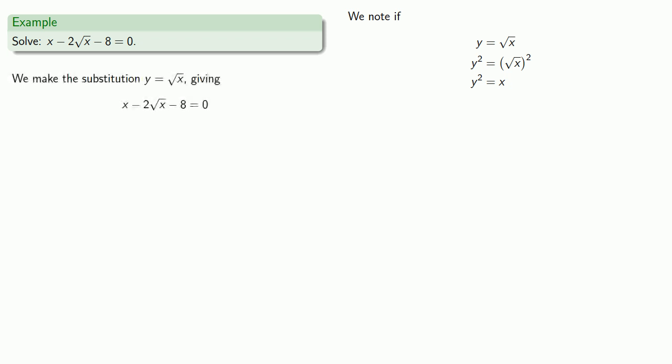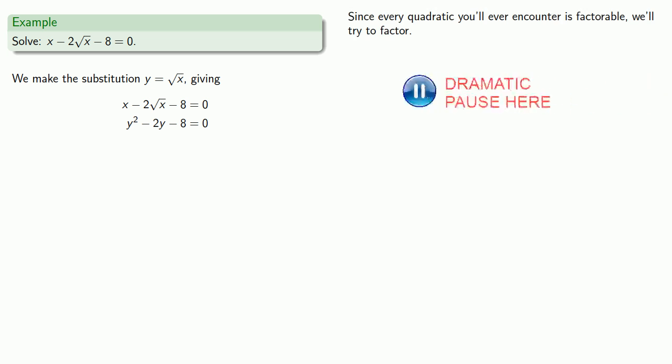So let's make the substitution y equals square root of x. And that gives us y squared minus 2y minus 8 equals 0, a quadratic equation. Since the universe is a kind and gentle place, and I am a kind and gentle math teacher, every quadratic you'll ever encounter is factorable, so we'll try to factor. Yeah, I don't think so.